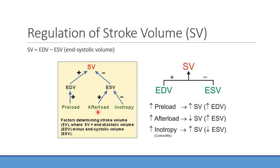As afterload increases, end-systolic volume increases because there's more pressure pushing against the ventricle, making it harder to pump blood out. That increases end-systolic volume and has a negative effect on stroke volume. Stroke volume equals end-diastolic volume minus end-systolic volume.